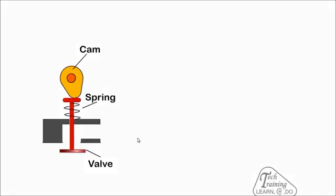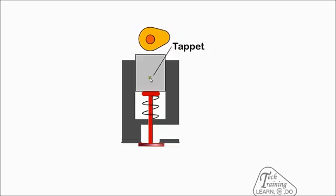A camshaft can operate the valve directly, or usually a cam follower or tappet is used between the cam and the valve. Sometimes the camshaft lobe is offset from the center of the valve and tappet to encourage the tappet and valve to rotate as it is pushed down.